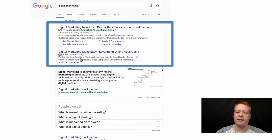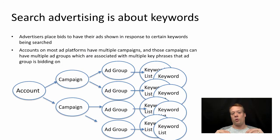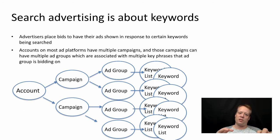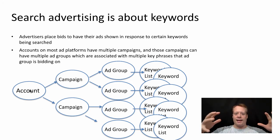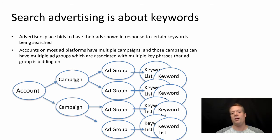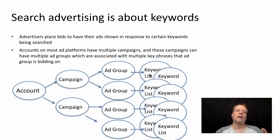If you want to put together a search advertising campaign, the first thing to think about is keywords, because search engine advertising is about identifying keywords you want your website associated with and asking Google, Bing, or whoever to show your ad with those keywords. You have an account at the highest level, associated with different campaigns. Within campaigns you have different groups of ads, and within each group you have different keyword phrases you're trying to pair.